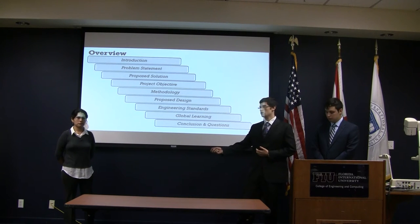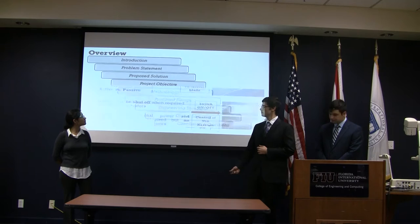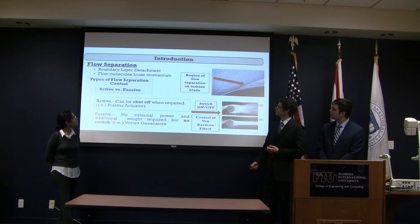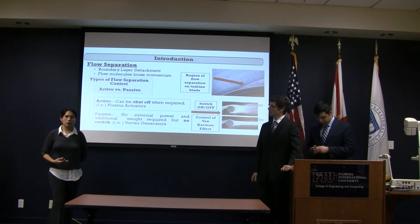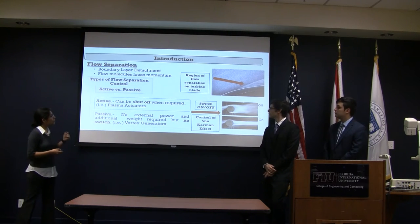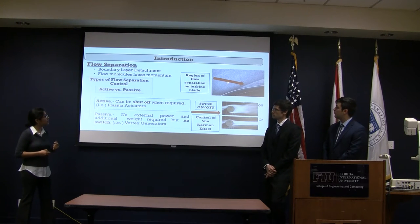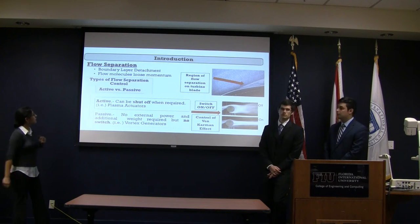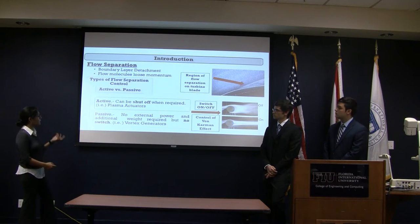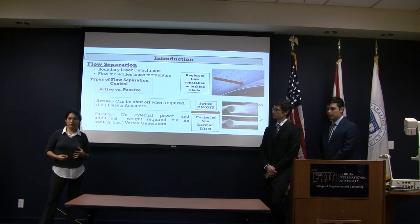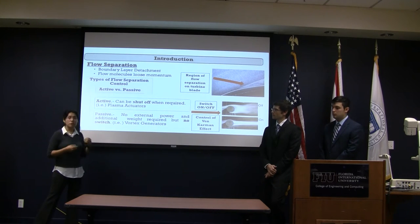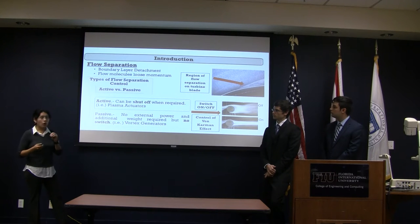Now Daniela is going to talk to you about flow control and types of flow. So, what is flow separation? Flow separation is going to occur in the boundary layer, and it's going to be a detachment due to the molecules of the flow losing momentum. We have two types of flow control separation: active and passive. An active type can be switched off when we need it — an example are plasma actuators. A passive type doesn't require external power or additional weight, but it cannot be switched on or off when we need it.